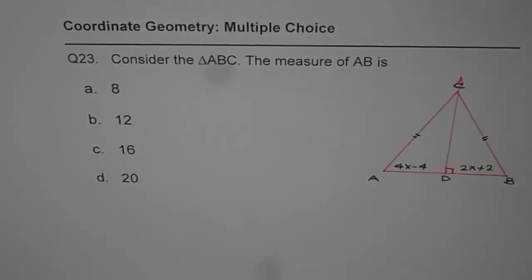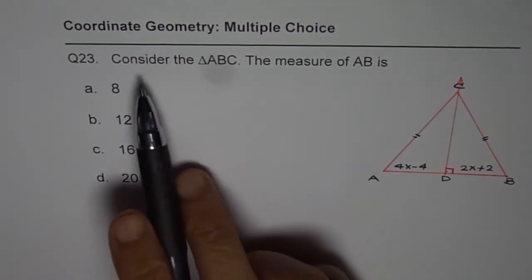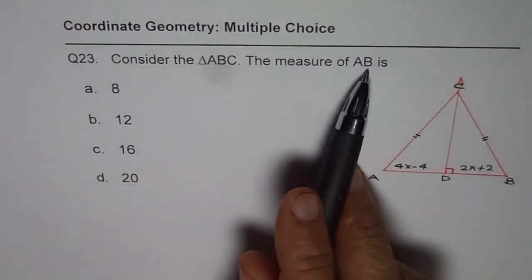Question 23. Coordinate geometry, multiple choice. Consider the triangle ABC. The measure of AB is?